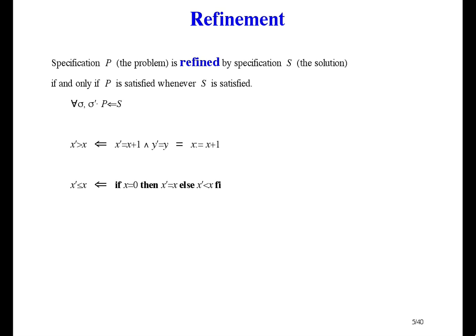The next example is refining x prime less than or equal to x by, if x equals 0, then leave x alone, else decrease x, which we could write as a disjunction if we want.